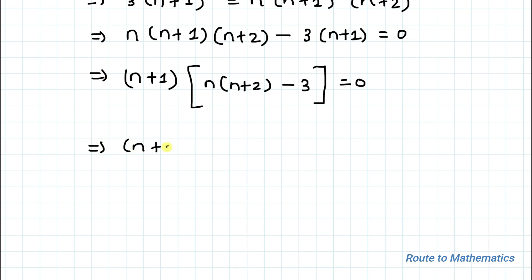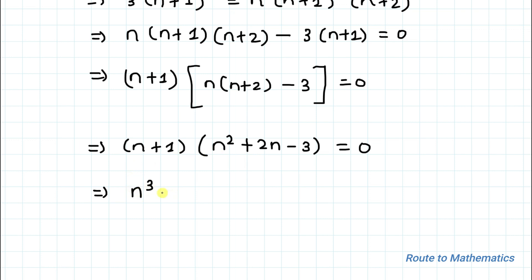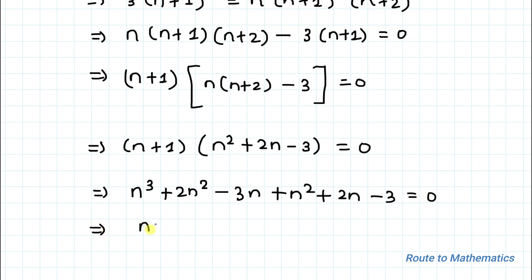This means (n+1) times (n² + 2n minus 3) equals 0. Expanding fully: n³ + 2n² minus 3n plus n² + 2n minus 3 equals 0, which simplifies to n³ + 3n² minus n minus 3 equals 0.